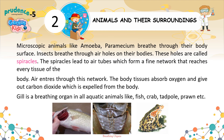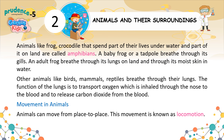Air enters through this network. The body tissues absorb oxygen and give out carbon dioxide, which is expelled from the body. Gills are the breathing organ of all aquatic animals like fish, crab, tadpole, and prawn. Animals like frog and crocodile that spend part of their lives under water and part on land are called amphibians. A baby frog or tadpole breathes through its gills. An adult frog breathes through its lungs on land and through its moist skin in water. Other animals like birds, mammals, and reptiles breathe through their lungs.